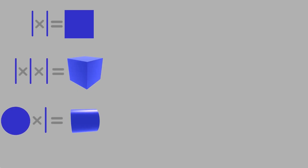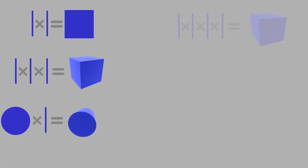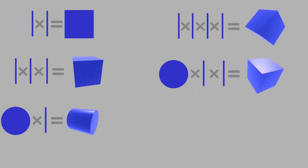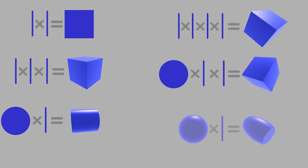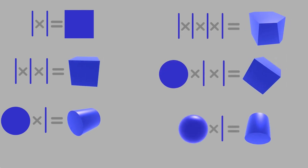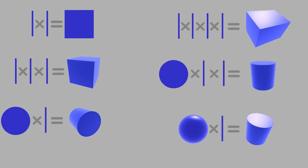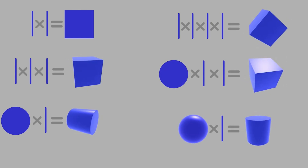A square, a cube, a cylinder, a tesseract, a cubinder, a spherinder. However, these are not the only shapes we can create.